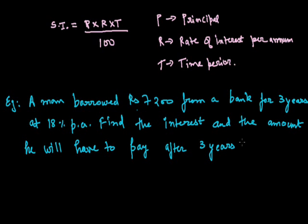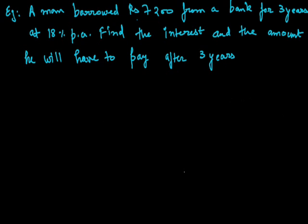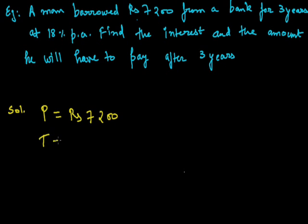In this question, you can see that the man borrowed Rs. 7200. Therefore, the principal is equal to Rs. 7200. He has borrowed this money for 3 years, so the time period is 3 years. And the rate of interest R is 18% per annum. We have to find the interest and the amount he will have to pay after 3 years.